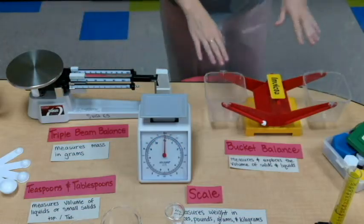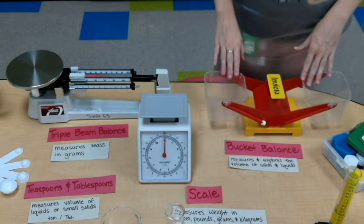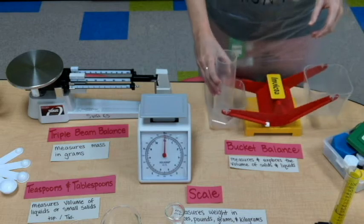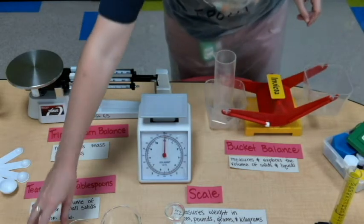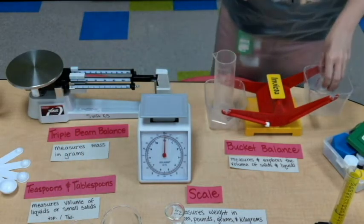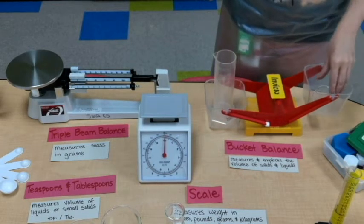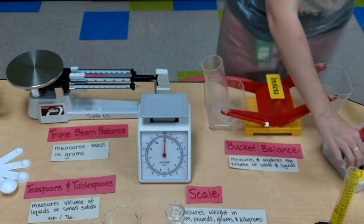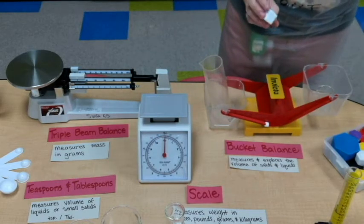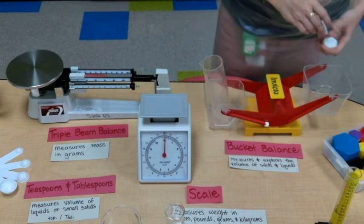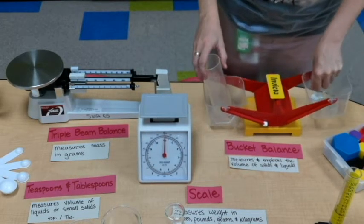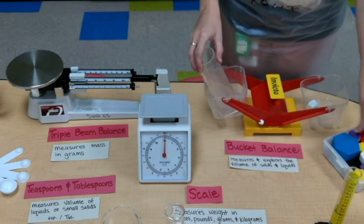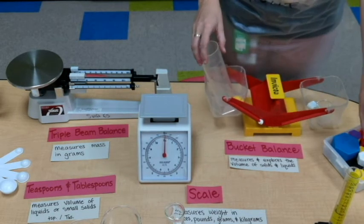Over here, I have a bucket balance. So you could just grab one item, place it over here, and use that to compare or explore the volume of two different items. You can add, add, add some more. Sometimes we use gram stackers. And you can place them on one side. You see how much that adjusts the bucket balance. And this just allows for visuals.